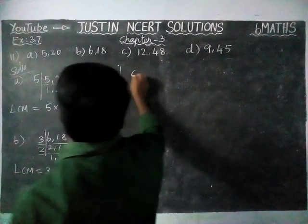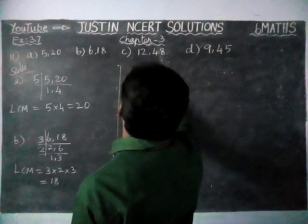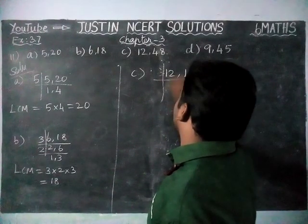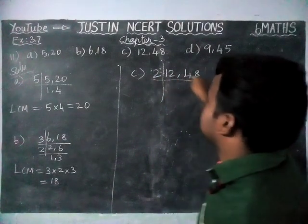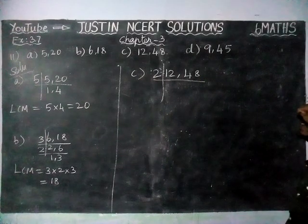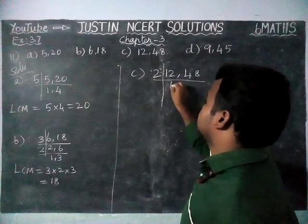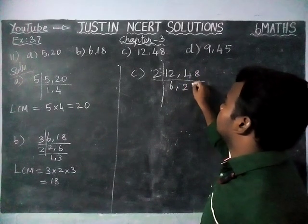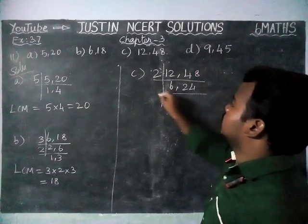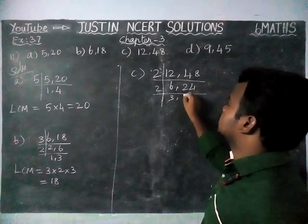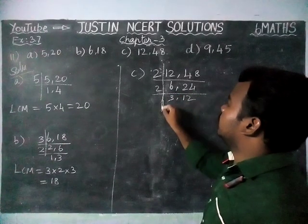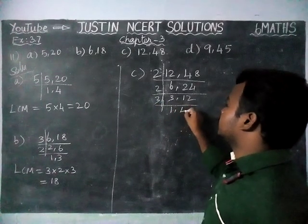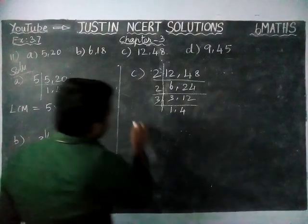Now, option C: 12, 48. We are going to divide it by 2, because the last digits are divisible by 2. So we are taking this number. 6, 2s are 12. 2, 4s — 2, 2s are 4. 4, 2s are 8. Now we are going to divide it by 2. 3, 2s are 6. 12, 2s are 24. Now we are going to divide it by 3. 1, 3 is 3. 4, 3 is 12. So now we are going to find LCM.